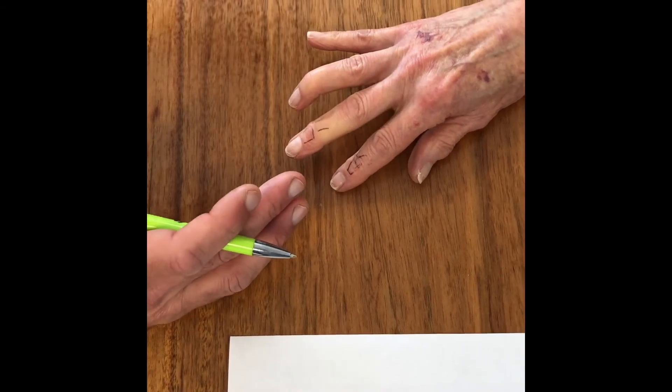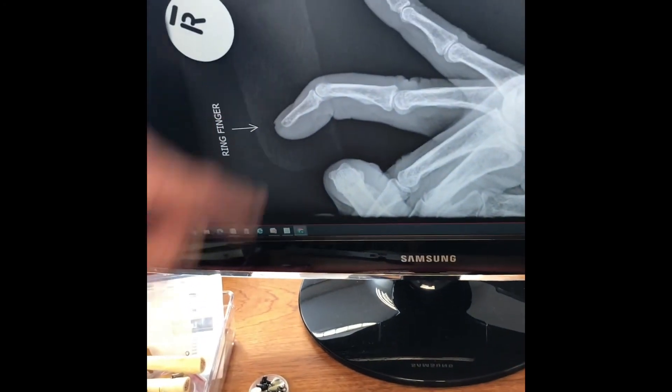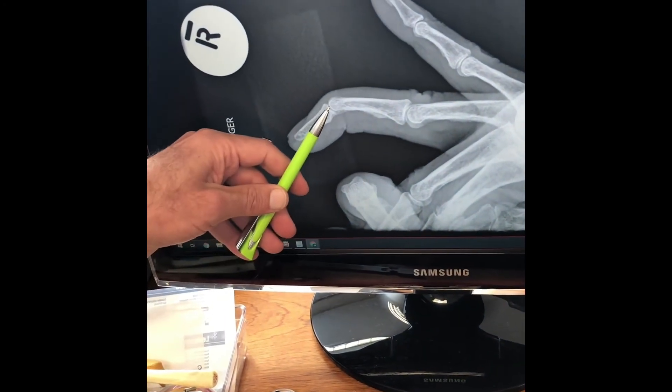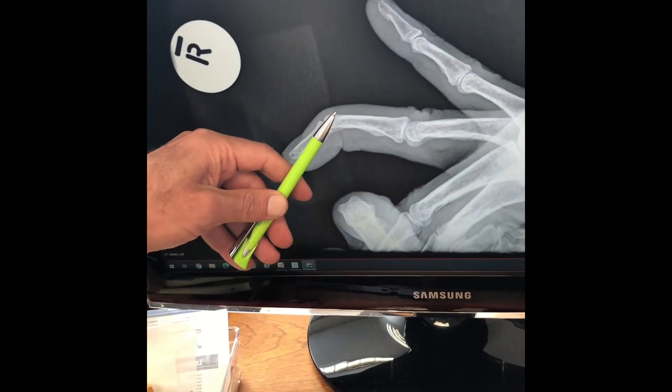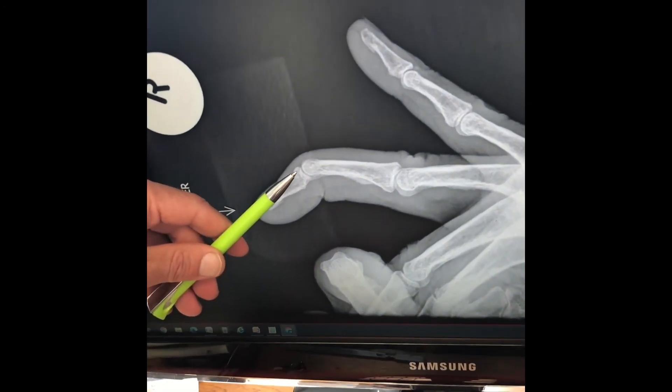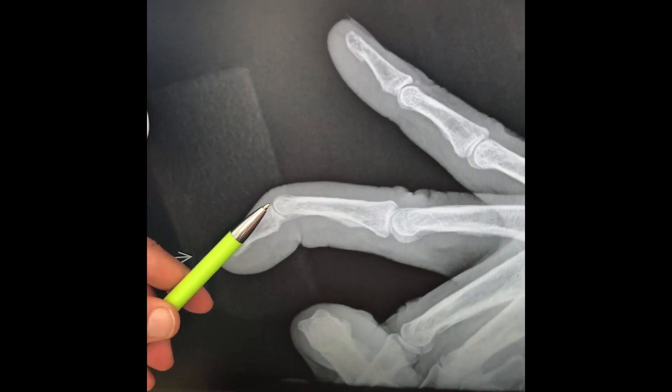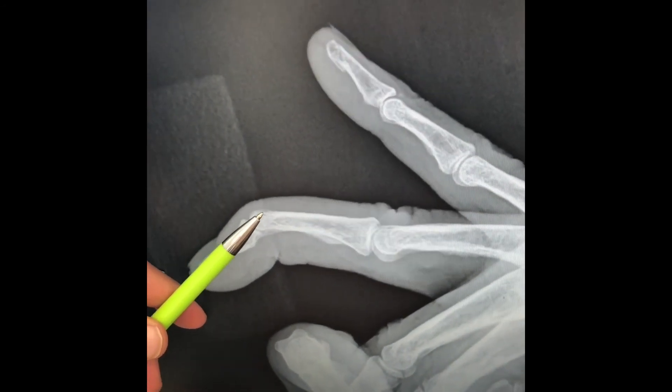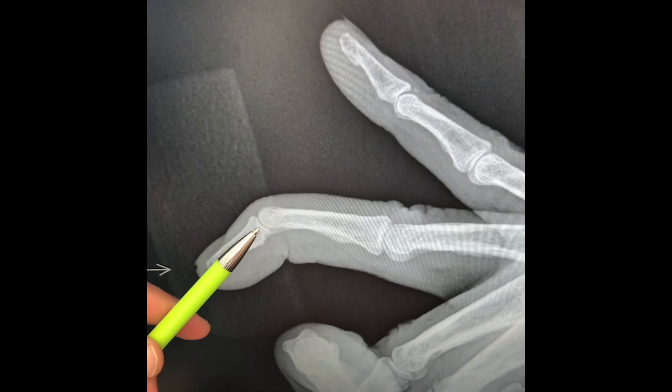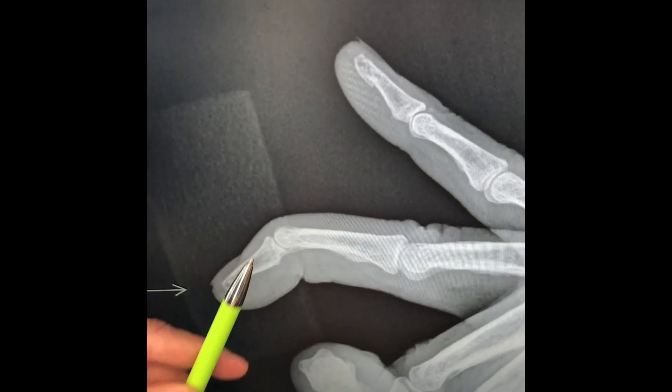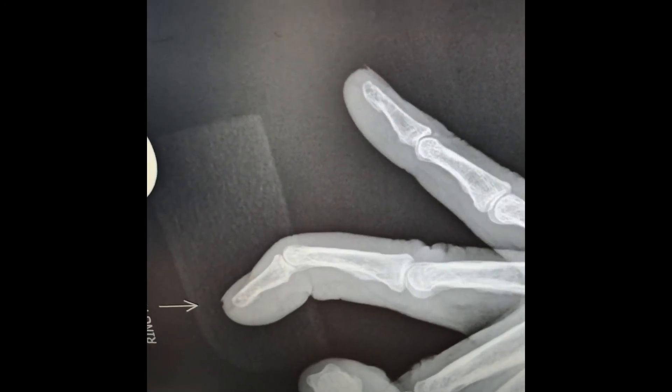Most of the time, we should consider taking an x-ray just to exclude a fracture. Sometimes a small piece of bone pulls off with the extensor tendon, and that might have to be managed differently. But as you can see, there's no bone injury here. This is a soft tissue problem. The extensor tendon is probably sitting there, and the bone is dropped into a flexed position and deformity.